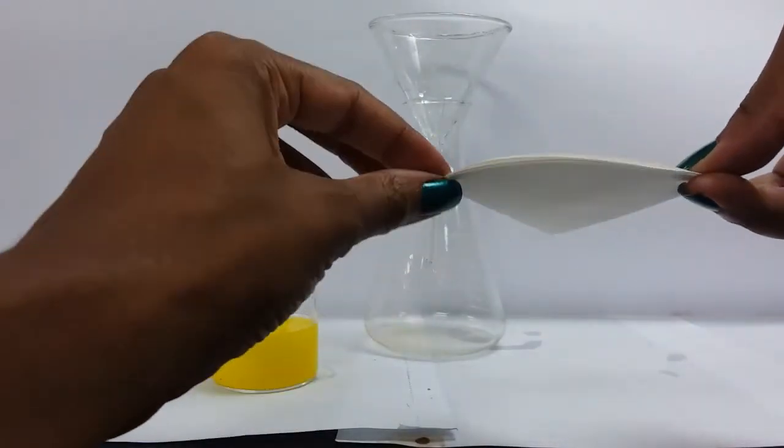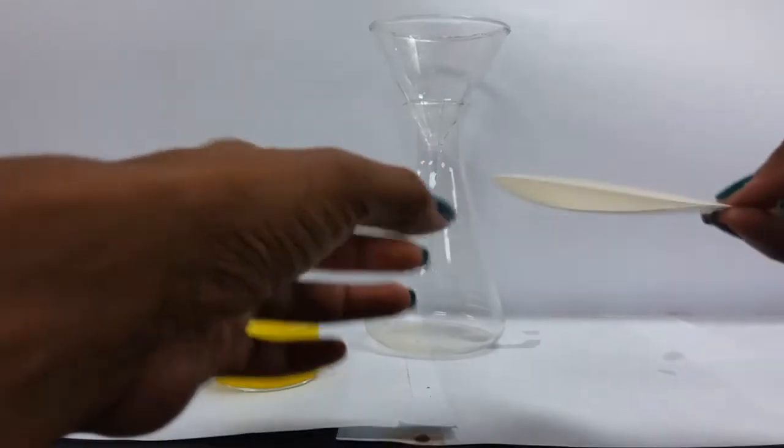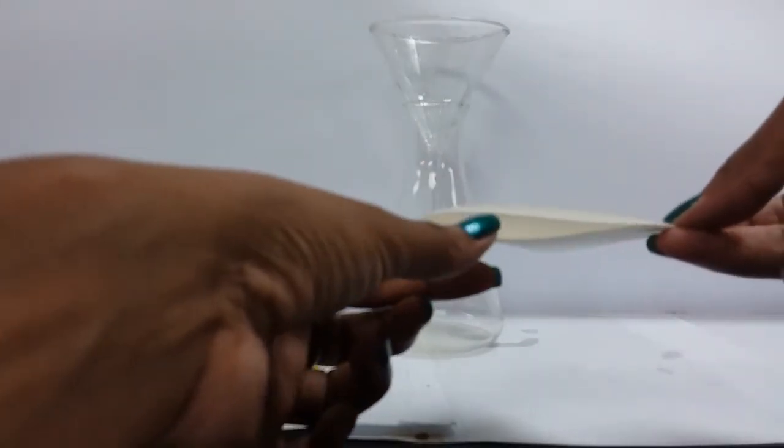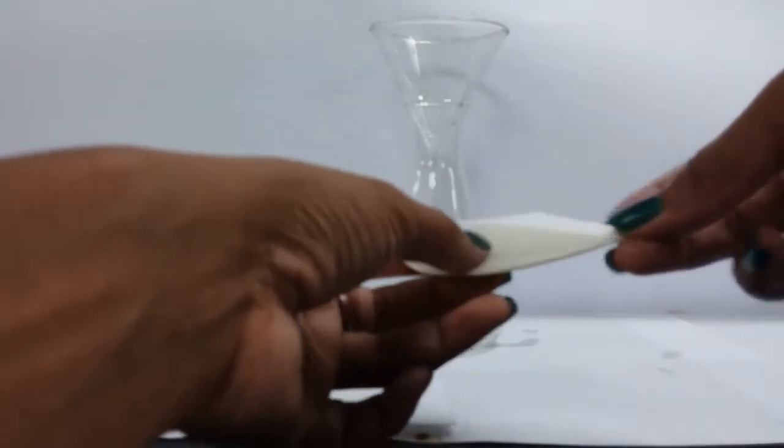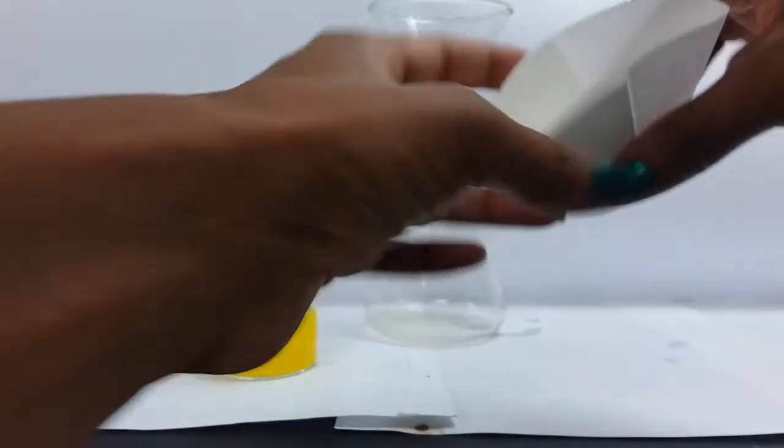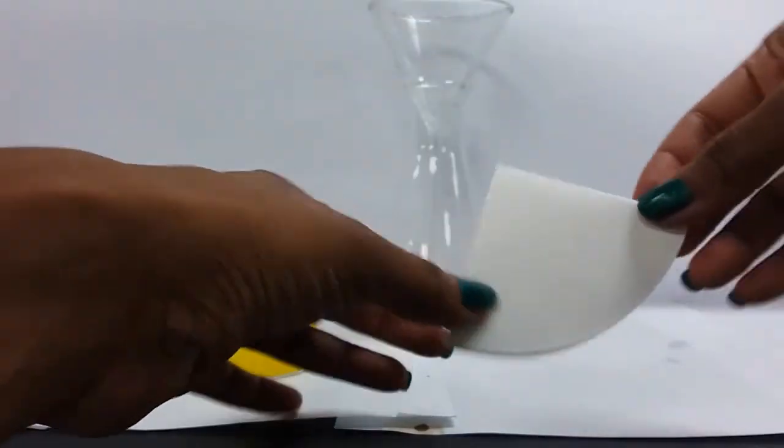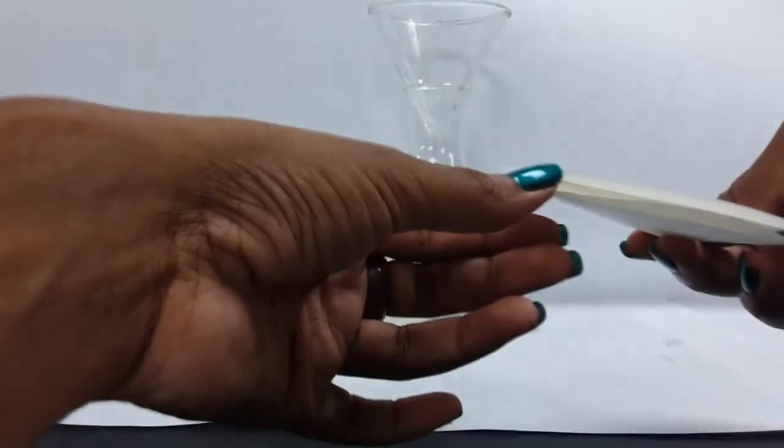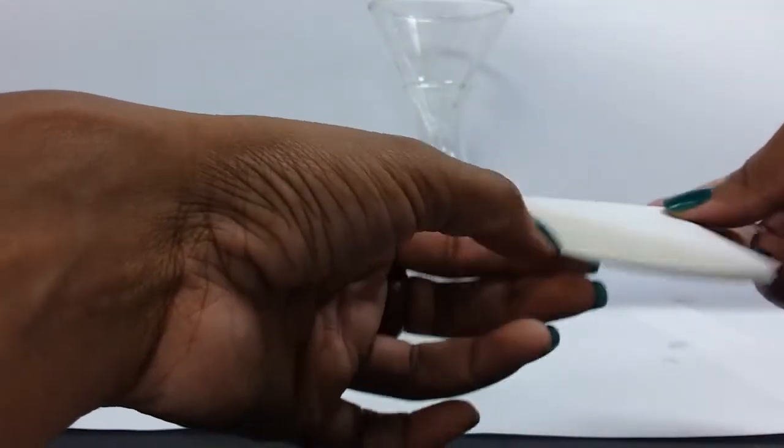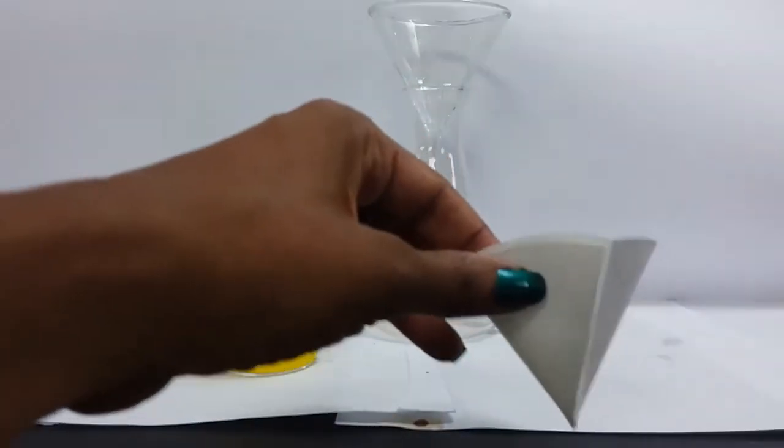So we have our folded filter paper, and you will take your finger and place it into one of the pockets, if you will, and open the filter paper to create a cone. I'll do that again. We have our filter paper folded into quarters, and we're taking our finger and just placing it into one of the pockets, and opening it into a cone. So we're going to place our filter paper in our filter funnel.